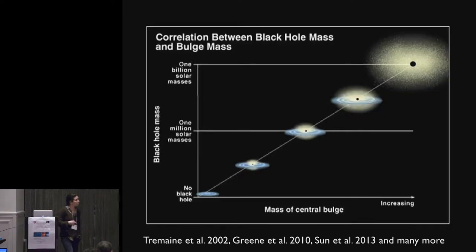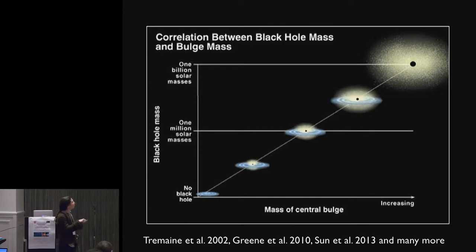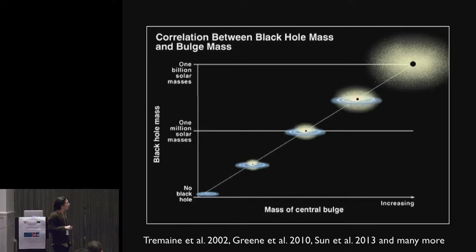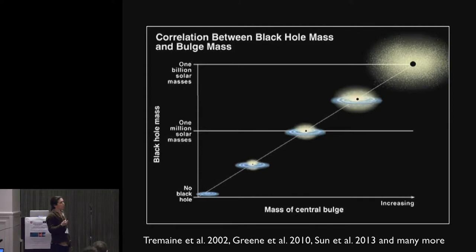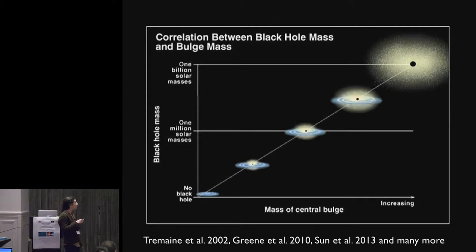So that's one reason we think that growing black holes play an important role in the growth of galaxies. The other reason is that we observe a ridiculously tight correlation between the mass of the black hole, again not measured as rigorously as we can for the black hole at the center of our own galaxy.